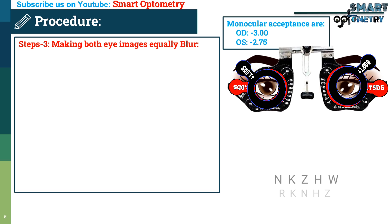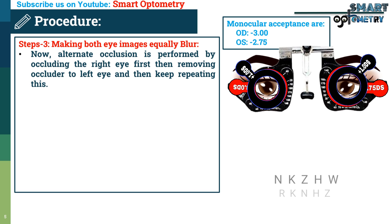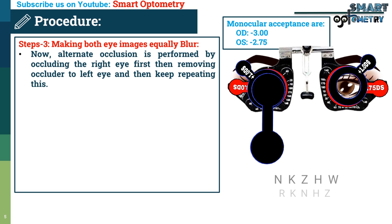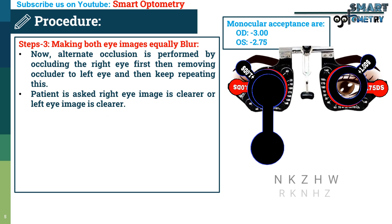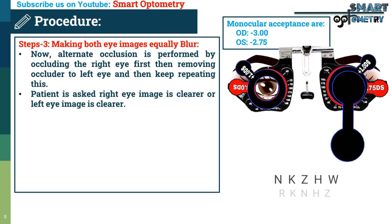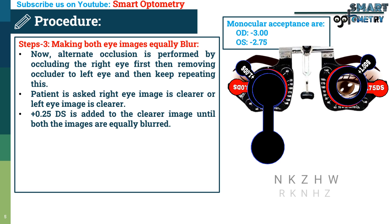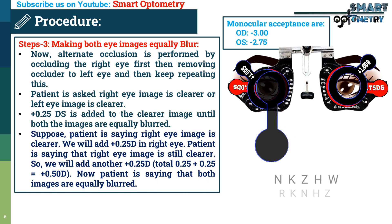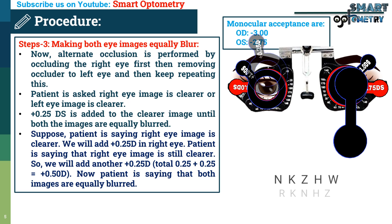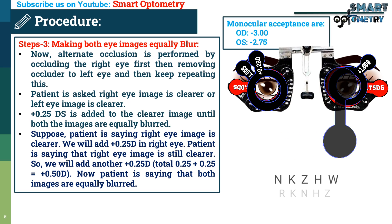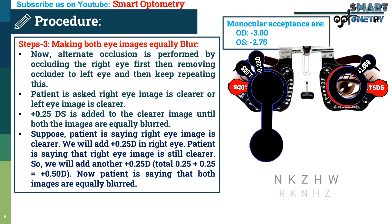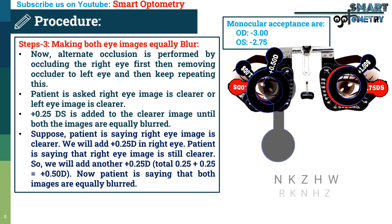Step 3 — Making both eye images equally blurred: alternate occlusion is performed by occluding the right eye first, then the left eye, repeating this alternately. The patient is asked whether the right or left eye image is clearer. Plus 0.25 dioptre spherical is added to the clearer eye until both images are equally blurred. Suppose the patient says the right eye is clearer — we add plus 0.25 dioptre, and if still clearer, another plus 0.25 dioptre, until both images are equally blurred.